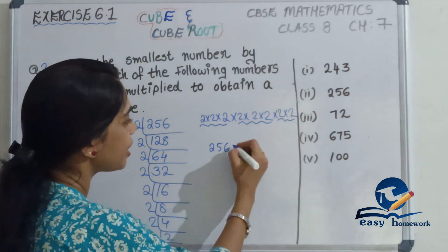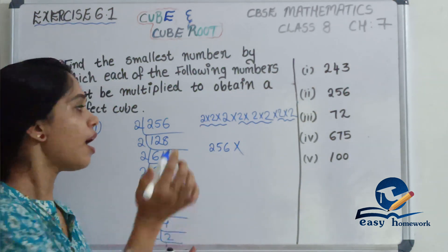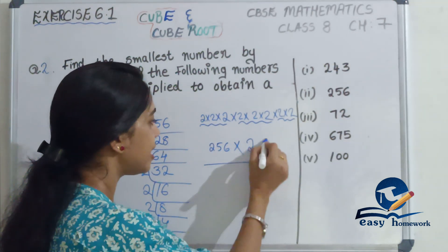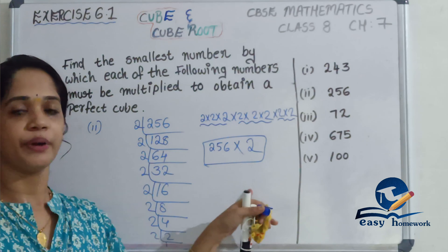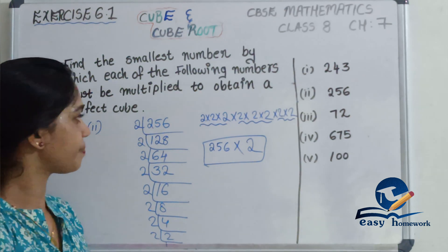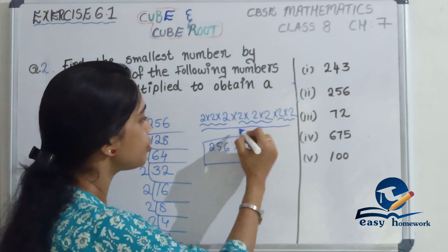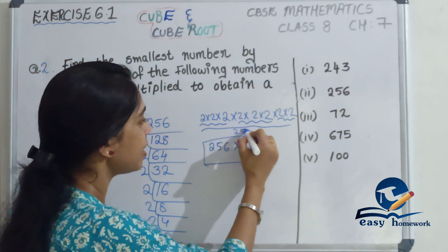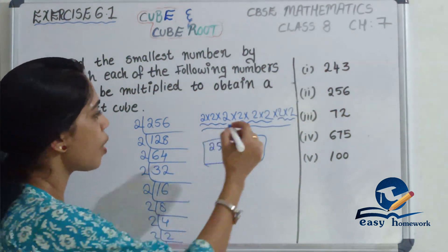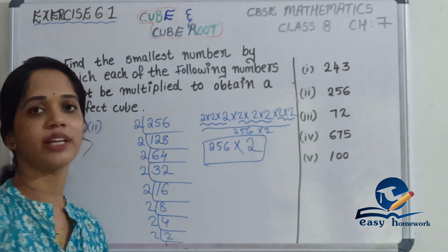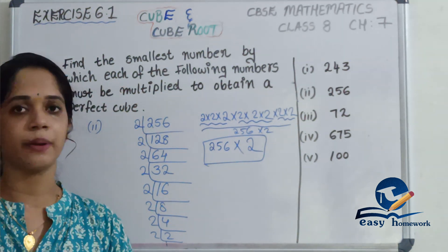The least multiplier is 2. That's 2. We can multiply to get the next perfect cube. Is it clear to all of you?